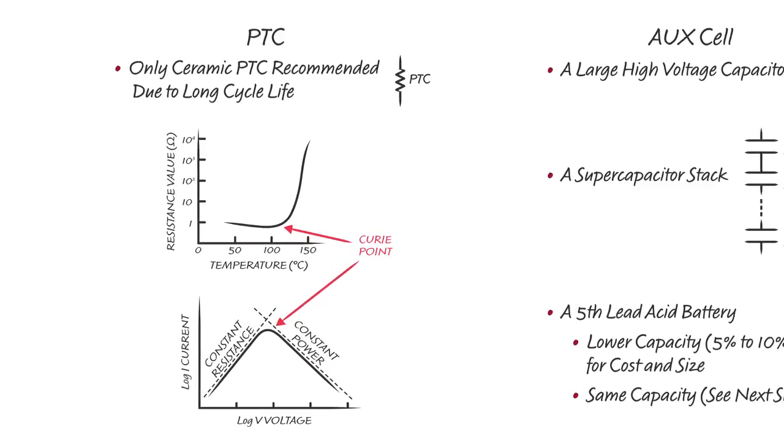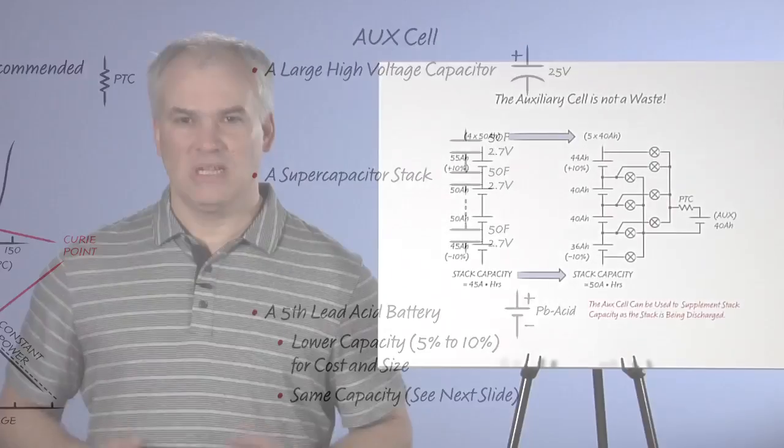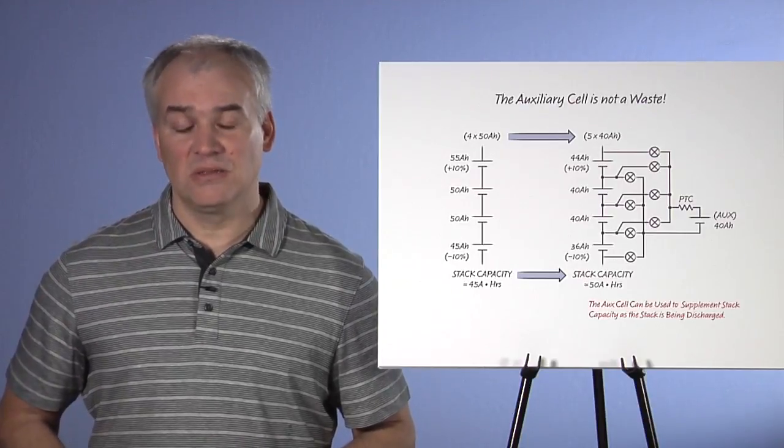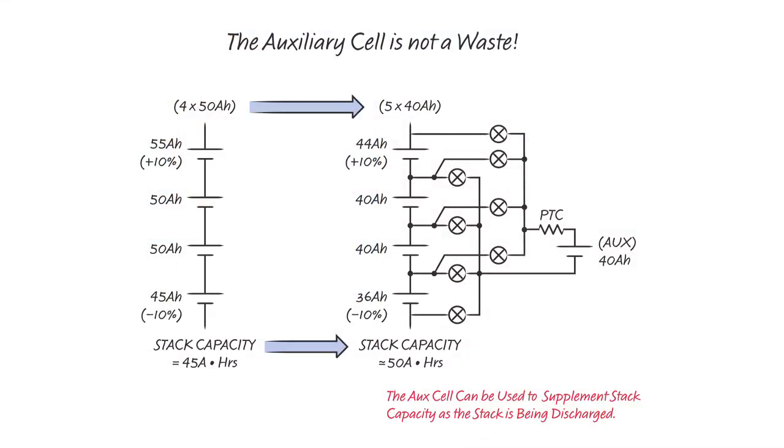The auxiliary, or aux cell, can be any two-terminal device that can hold charge, such as a high voltage capacitor, a supercapacitor stack, a smaller capacity lead acid battery, or a fifth lead acid battery of the same capacity. Now, it may seem that introducing a fifth battery to the system adds considerable cost, but this is not the case. The capacity of the auxiliary cell is actually usable capacity. In the example shown here, a stack comprised of four 50Ah batteries with no balancing could be redesigned to instead have five 40Ah batteries, four plus the aux cell, with balancing. If there is a mismatch, the effective capacity of the stack with balancing will be higher, despite both systems having the same cumulative purchased capacity. Even if a smaller capacity aux cell is used, the effective capacity of the stack is always increased when compared to a stack with mismatch and no balancing.